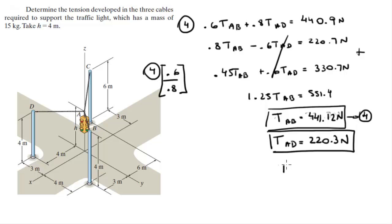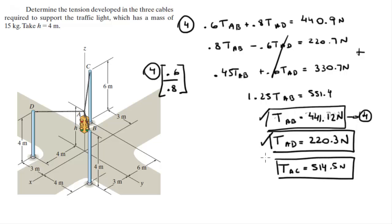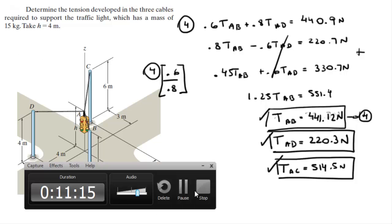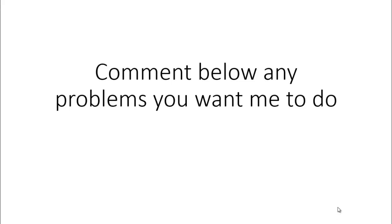So the final answers are: TAC = 514.5 N, TAB = 441.12 N, and TAD = 220.3 N. These are the tensions for all three cables. Remember, if you're working in the field, always account for the tension going straight down from the weight. Please comment below if you want me to work any problems, and thank you for hanging in there.